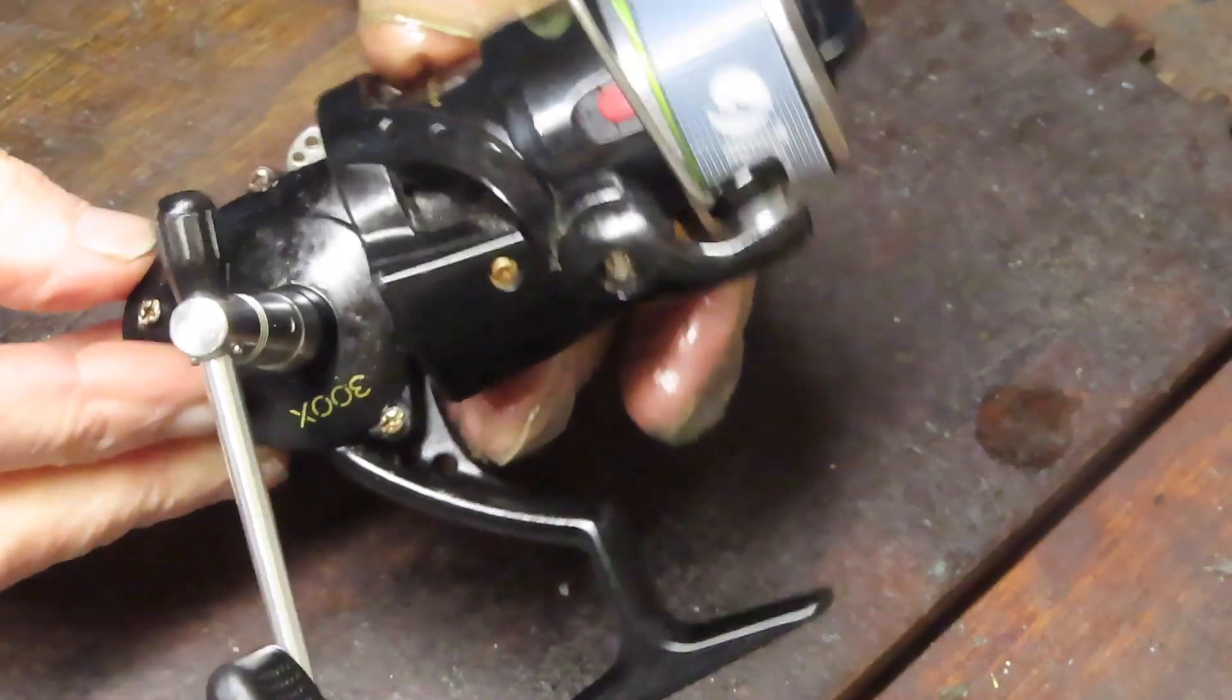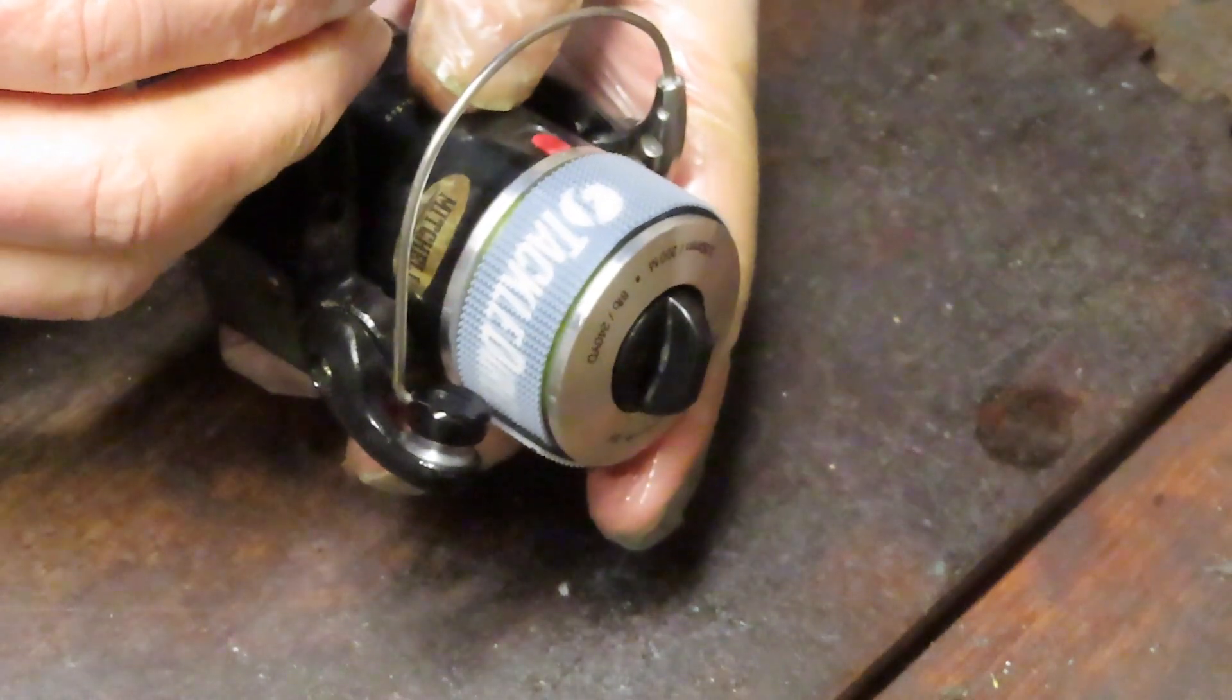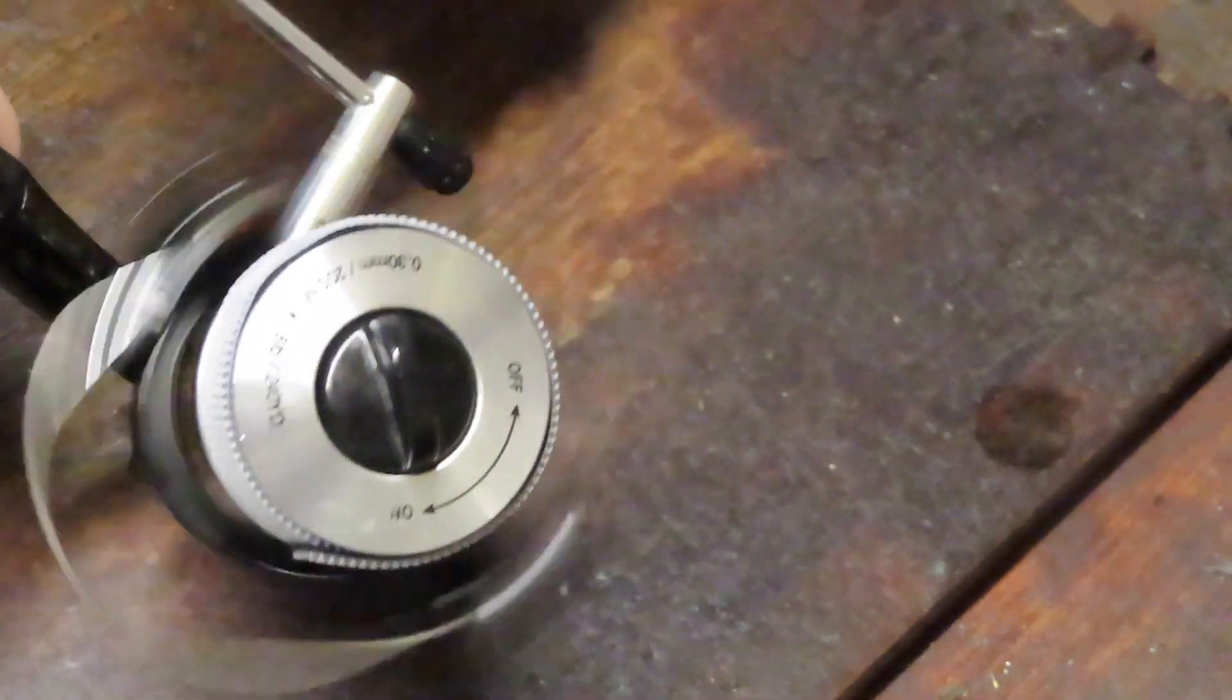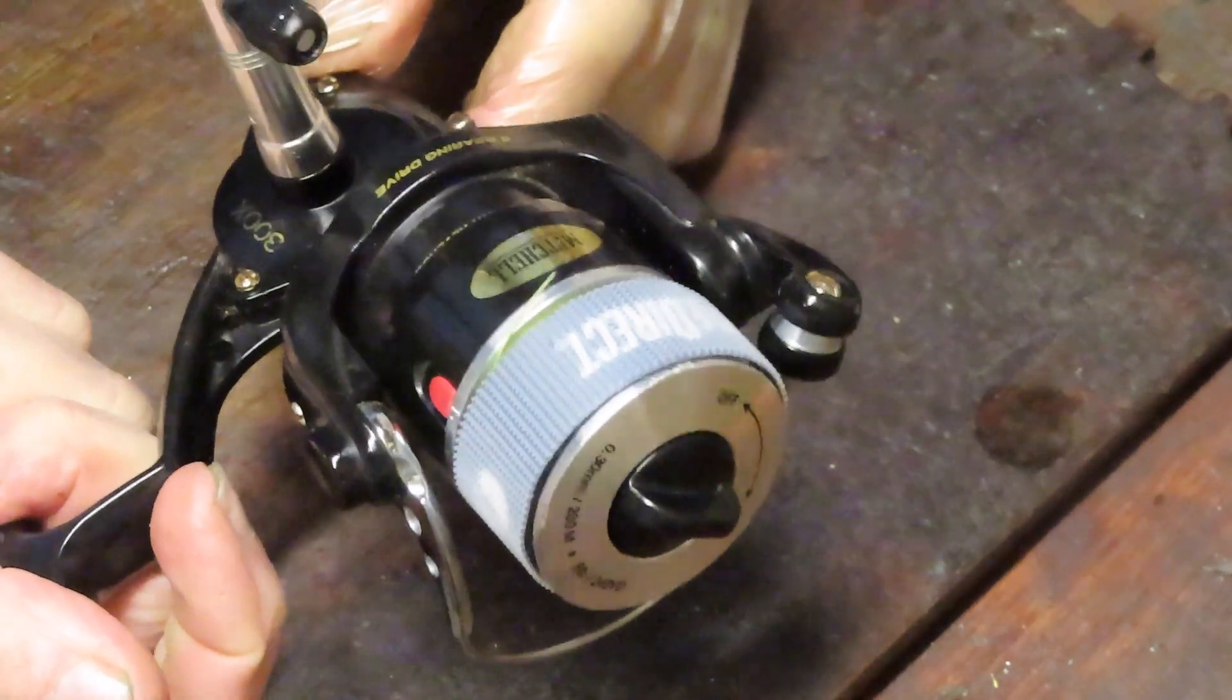This is a Mitchell 300x. This is a reel that Mitchell made. It was made in China, part of the new wave of the Mitchell product line. It's owned by Pure Fishing.